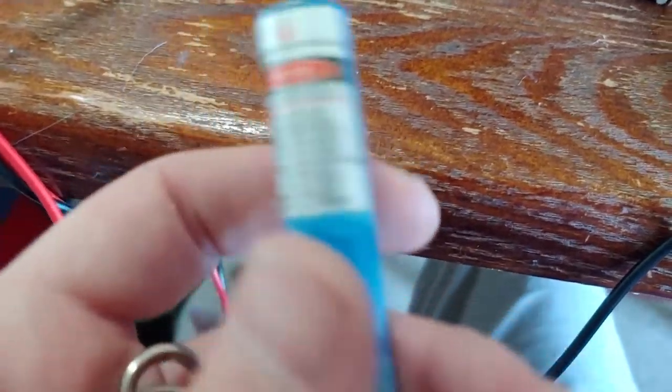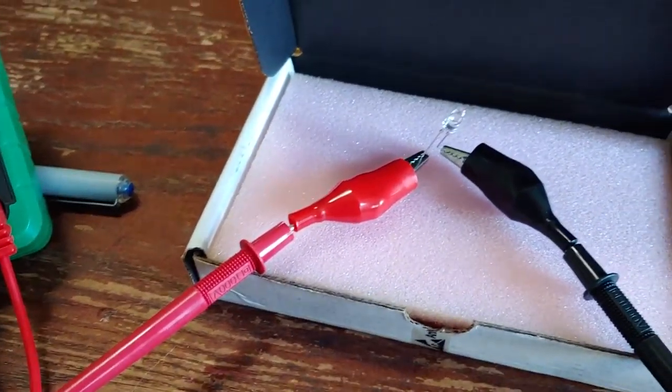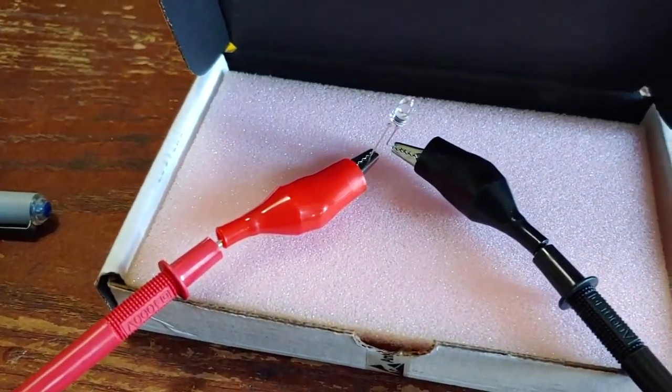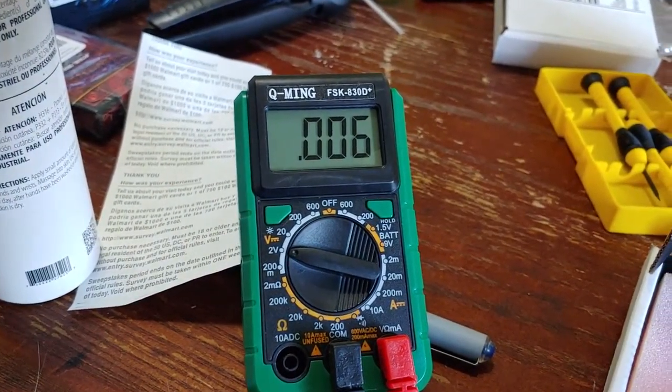About two nanometers off of what the LED produces, pretty close. Cool thing about LEDs: they work as solar cells as well. In fact, as you can see, it's picking up about six millivolts just off the ambient light.